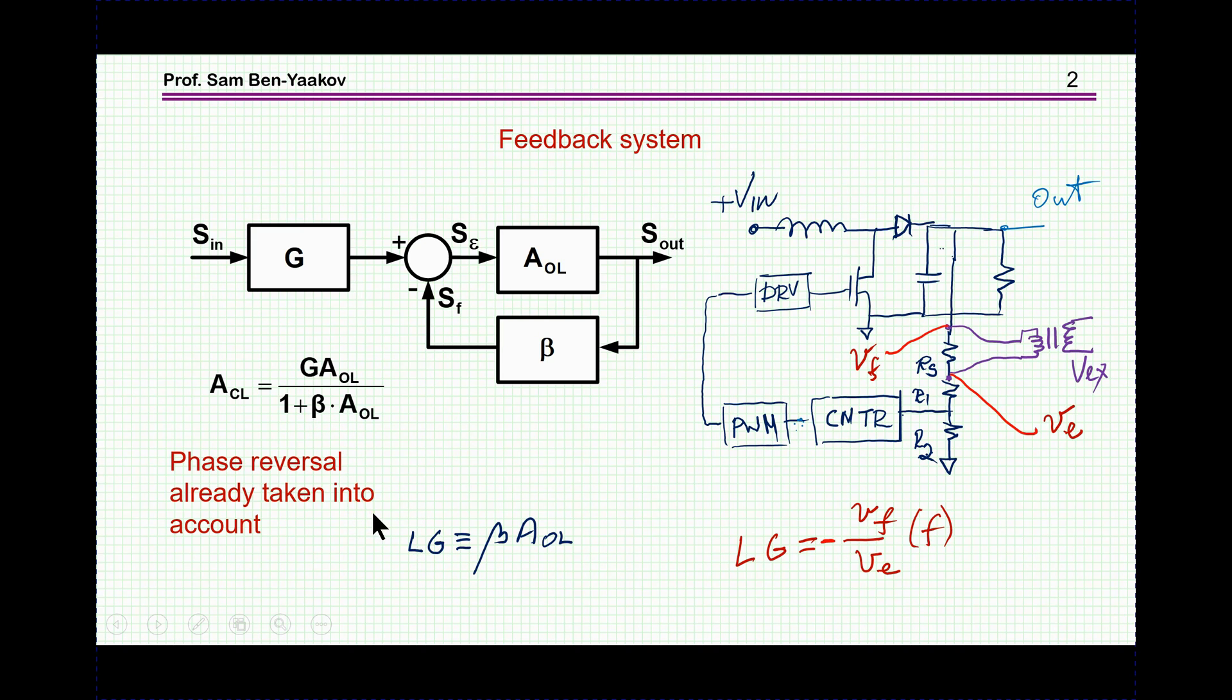Now there's one point I like to make clear, which is a source of confusion sometimes, and it will be important when plotting the curve, and that is that this expression with this plus is already taking into account this minus here. So the real gain from here up to here includes a phase reversal, because this is a negative feedback system, but in this expression we have already taken this into account. So this beta A open loop is at say low frequency without phase shift, is a positive number, while in reality it is a negative number because it is a negative feedback. So this is very important to remember.